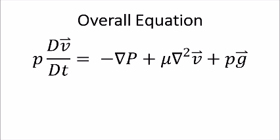So here it shows the overall equation, where little p is the density, big P is pressure, v is velocity, t is time, g is gravity, and mu is viscosity.